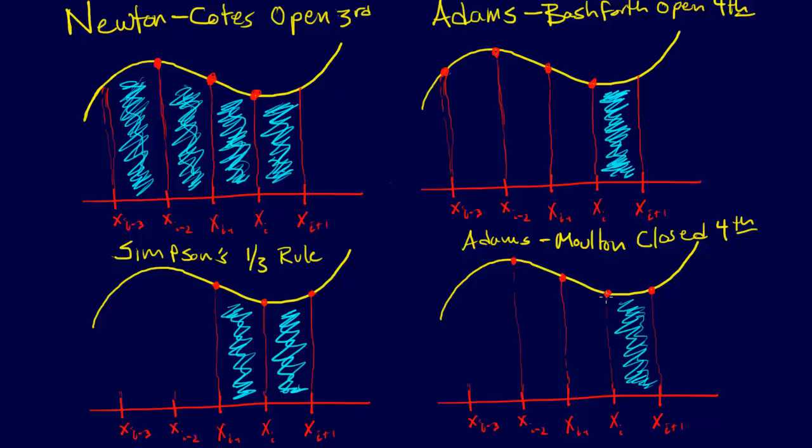Well, with the Adams-Moulton closed formulas, same thing, we fit a polynomial, but we fit a cubic here, and then instead of looking at the integral here, and the integral here, and the integral here, and the integral under all three, we just look at the integral under the last one. So that's the closed Adams-Moulton formulas.